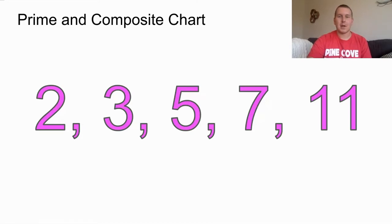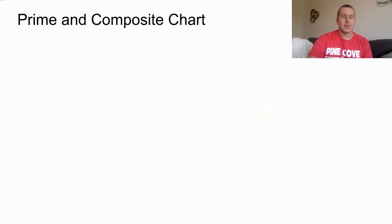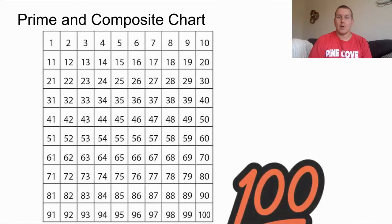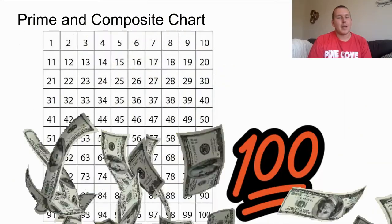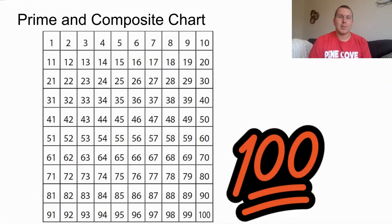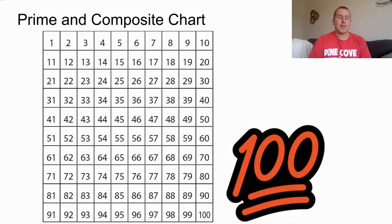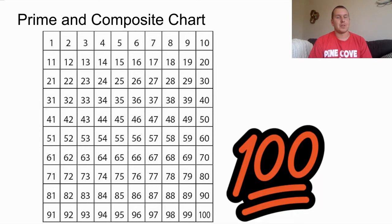So let's talk about how we can create a prime and composite chart. The first thing you're going to need is a hundreds chart, or a 'hundo chart' as I like to call them. Your teachers will provide hundreds charts already filled in from one to one hundred, but in the future as we get closer to the star test, you'll actually fill those numbers in yourself.